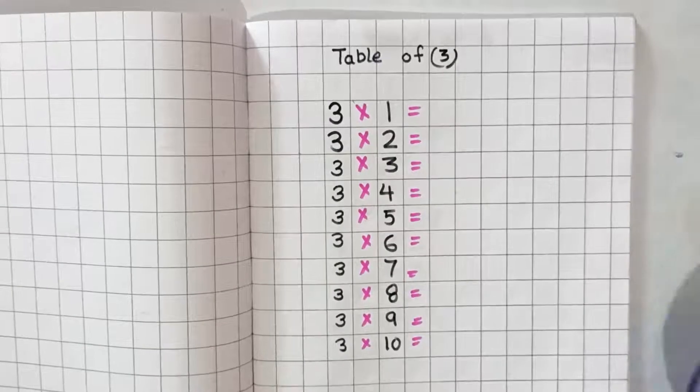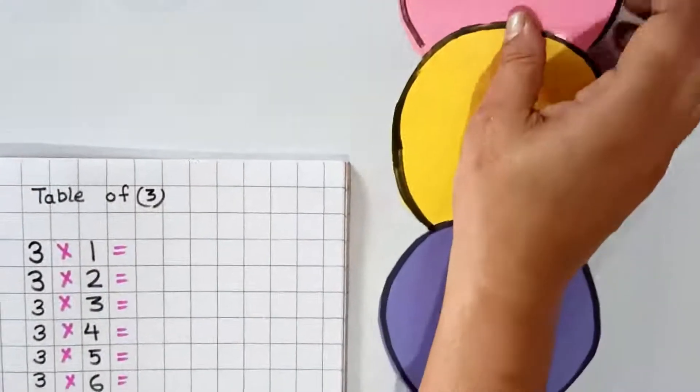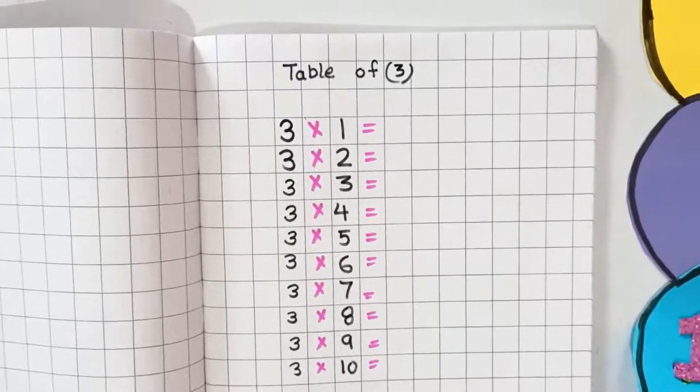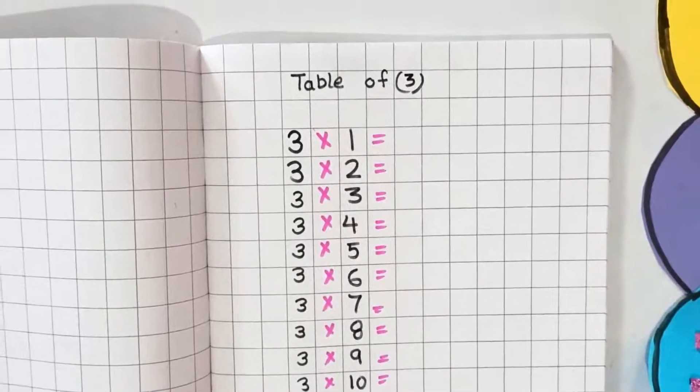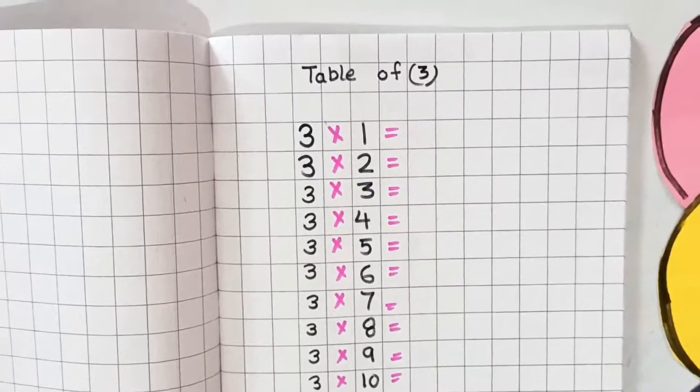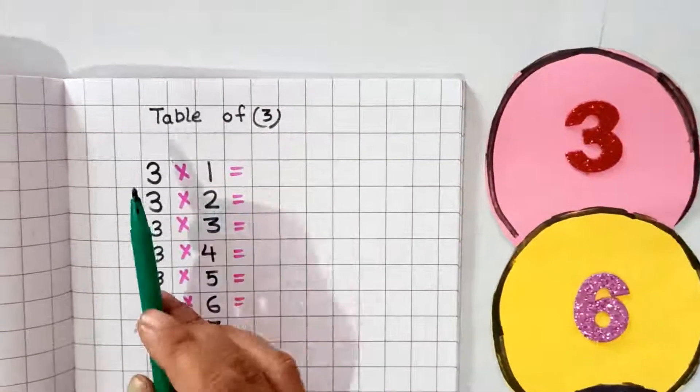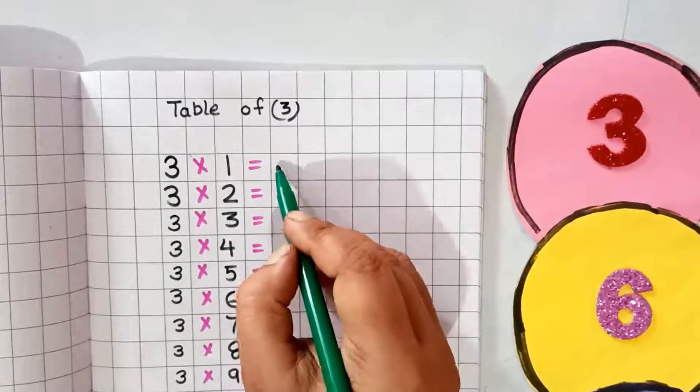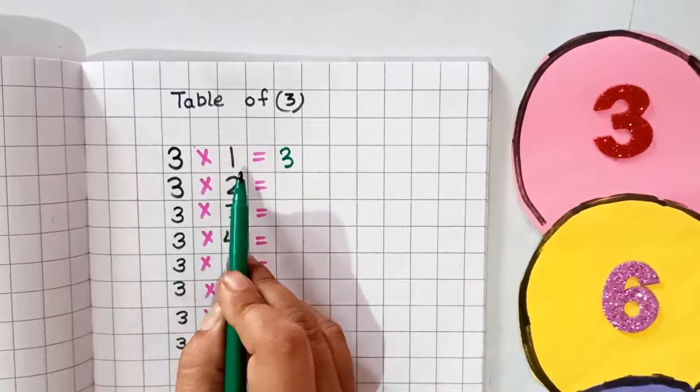If you learn skip counting by 3, you can learn the table of 3 very easily. See, this is the table of 3. Keep counting by 3. The first number is 3. Same way, in the table of 3, the first number is 3. Like, 3 times 1 is 3.